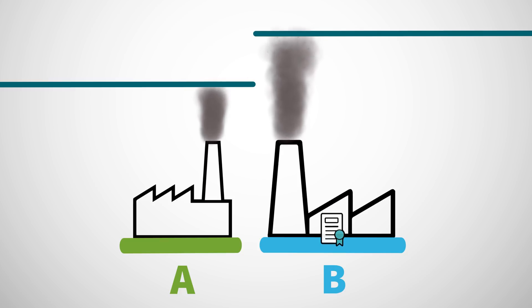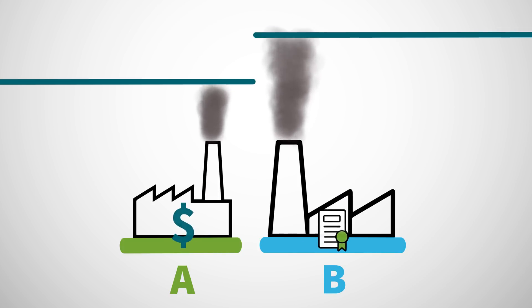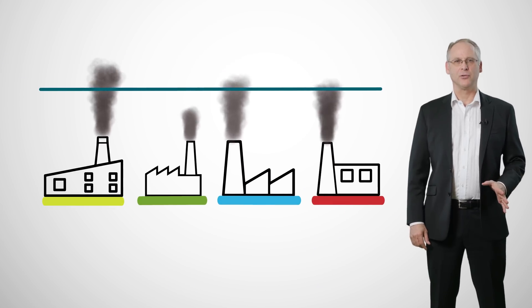Trading benefits both companies. A sells its excess permits to B. What is the overall impact on the economy?